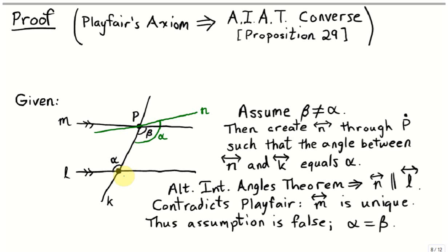Let's begin a proof by contradiction and assume that these angles are in fact not equal. In that case, let's create another line N through the point P, such that the angle that N makes with K equals alpha. Now, by an earlier proposition, Proposition 27, the alternate interior angles theorem says that since N and L have alternate interior angles equal, both equal to alpha, then the lines L and N must be parallel.